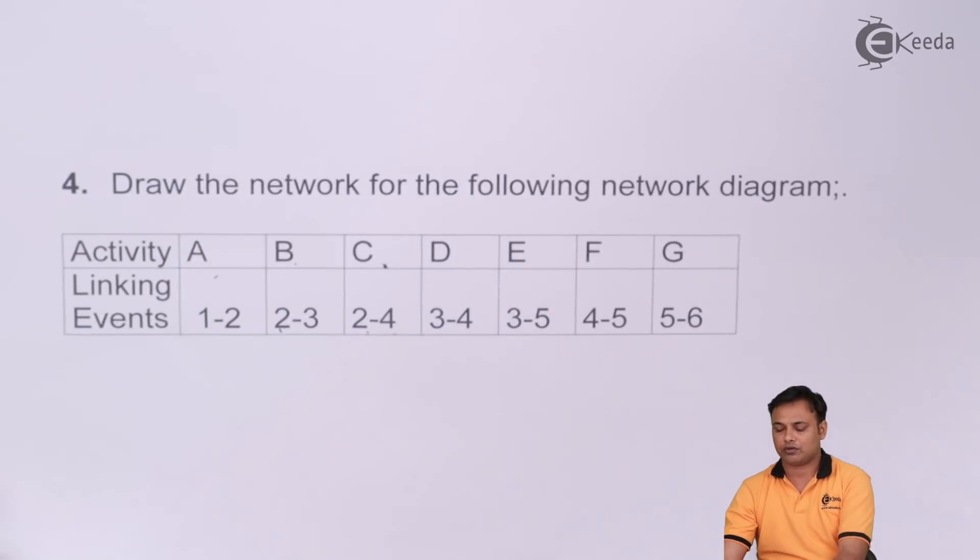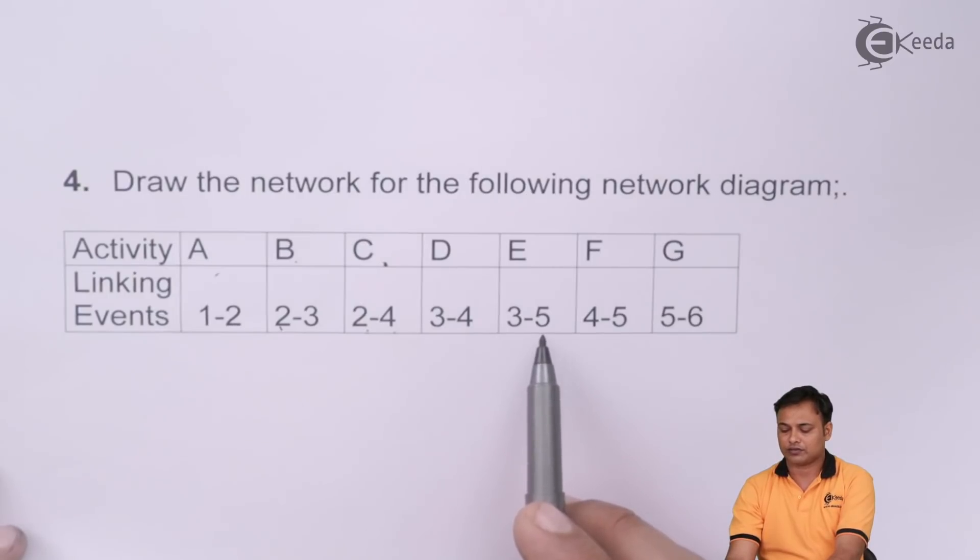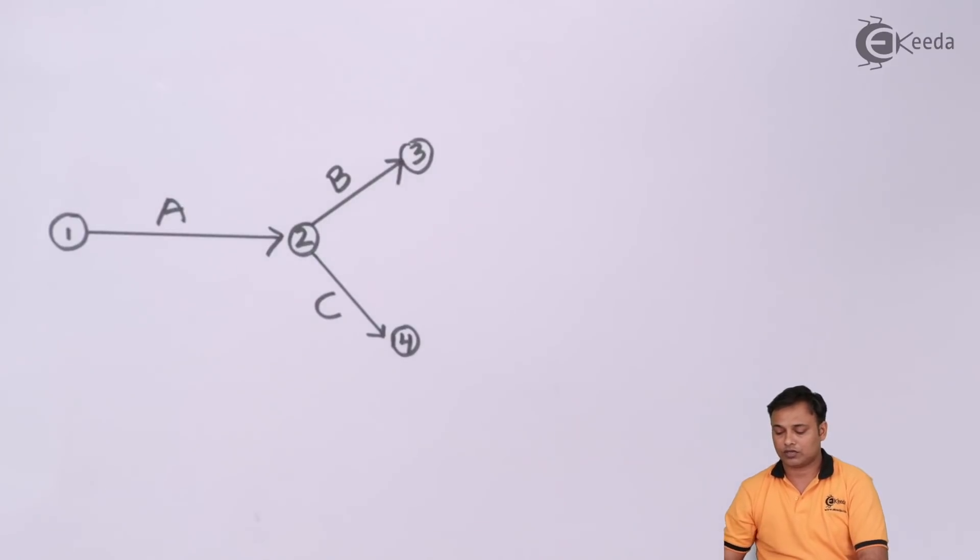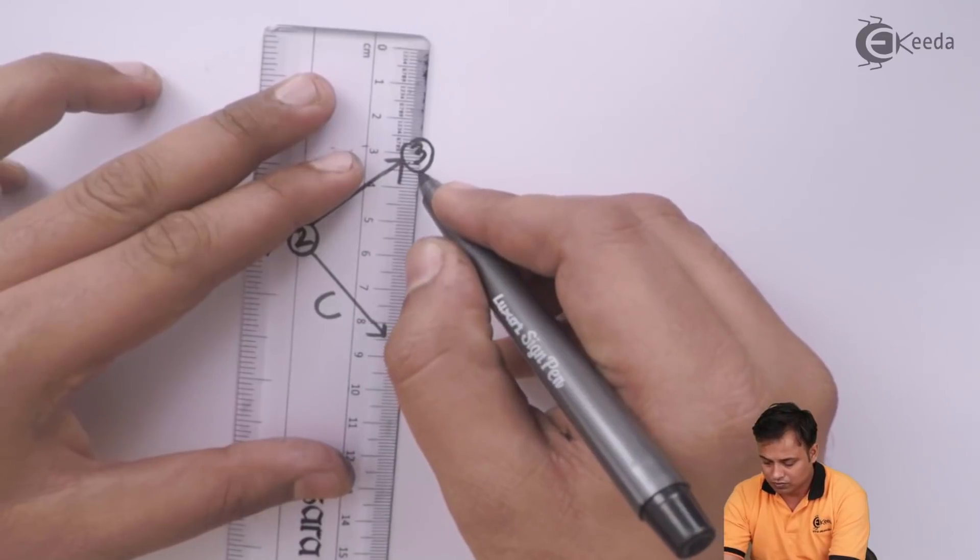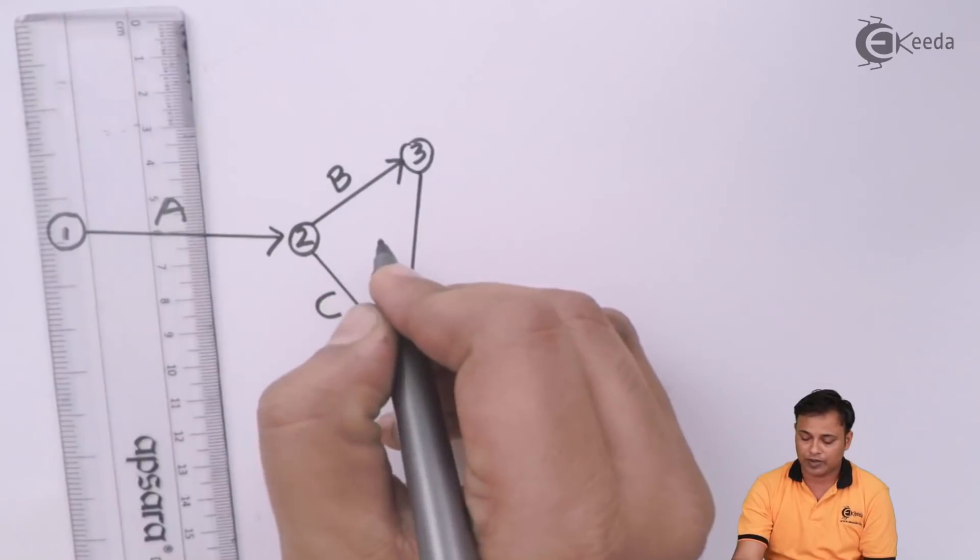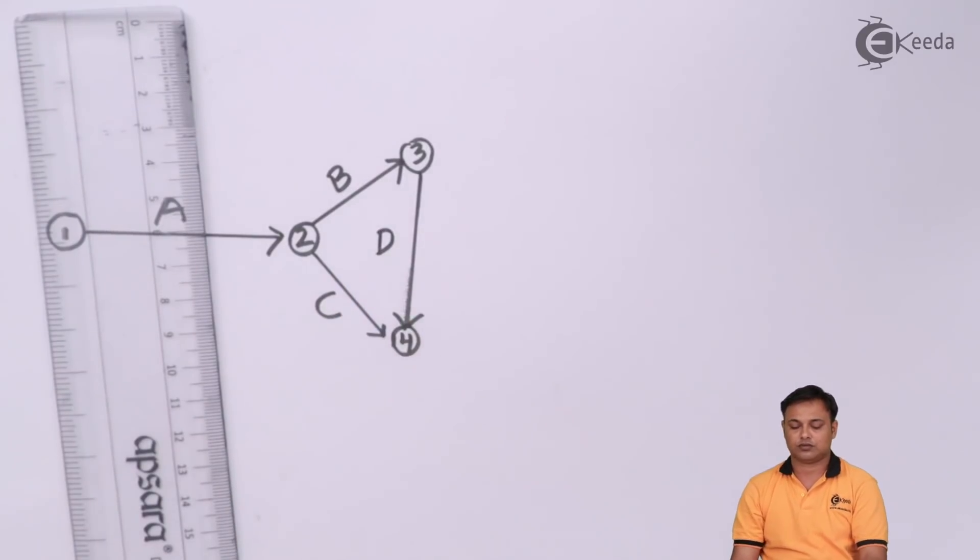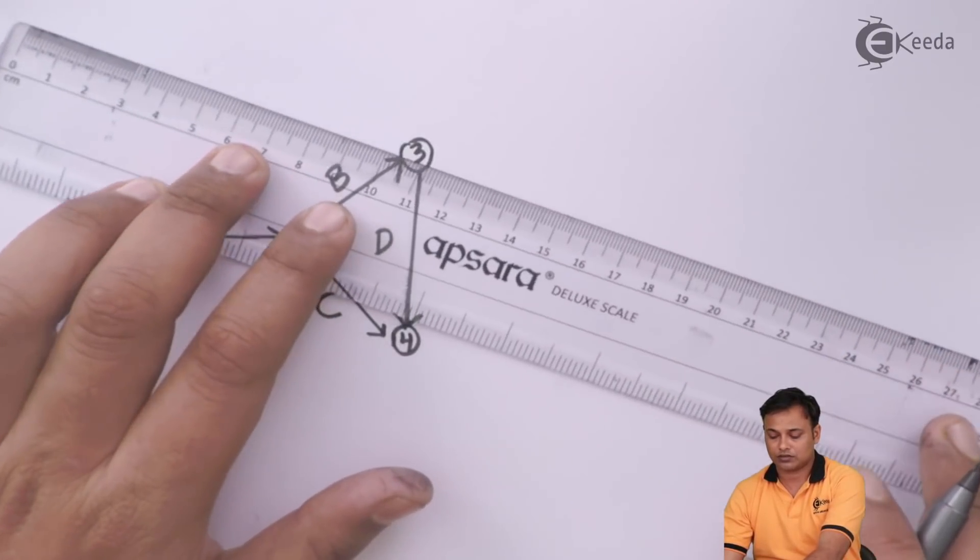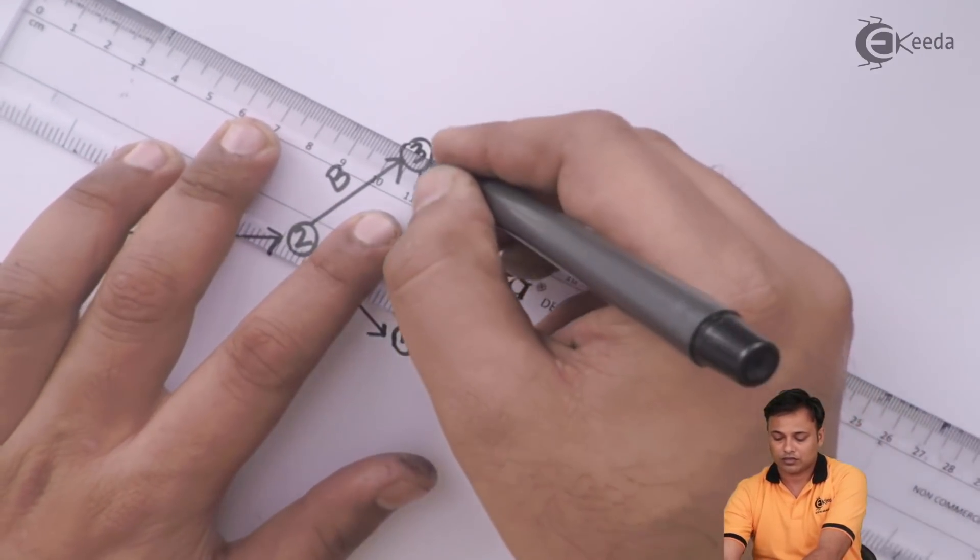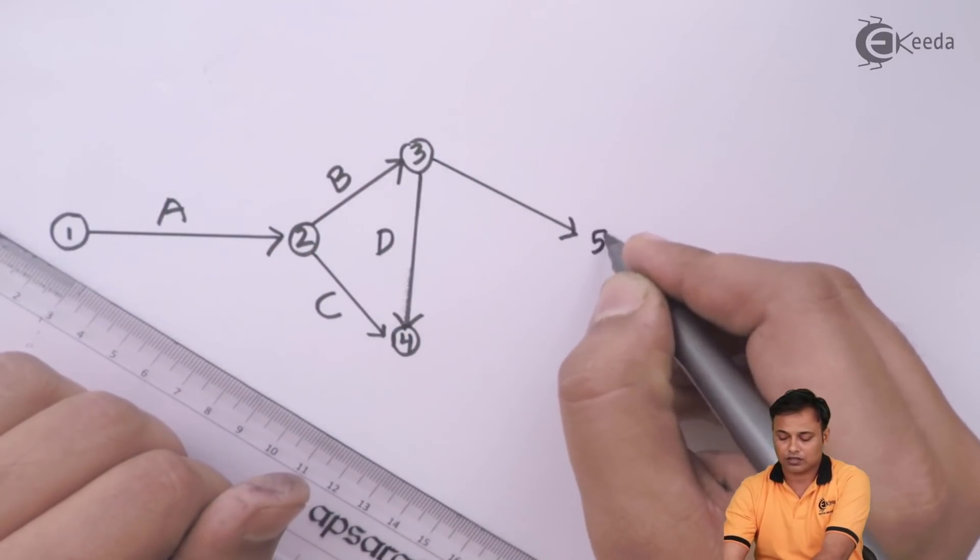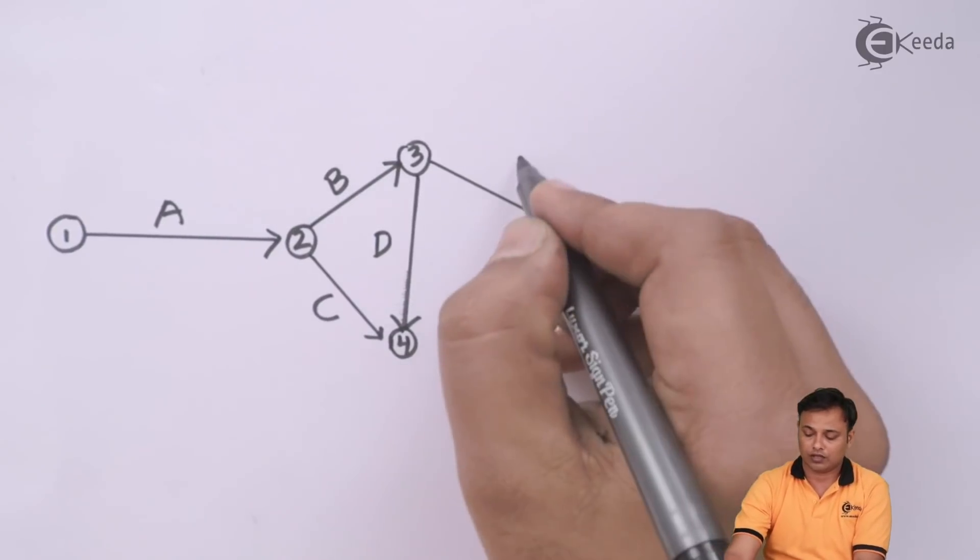Then we have 3 to 4 and 3 to 5 and then we have 4 to 5. 3 to 4 is D, 3 to 5 is E. So we need to join 3 to 4 downwards, 3 to 4 is my D and then 3 to 5 is my E.